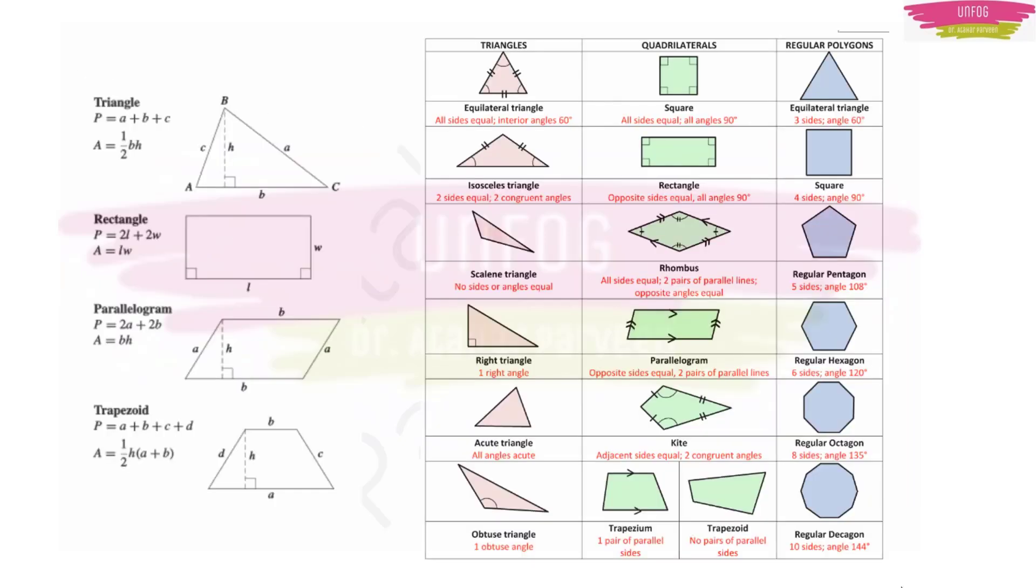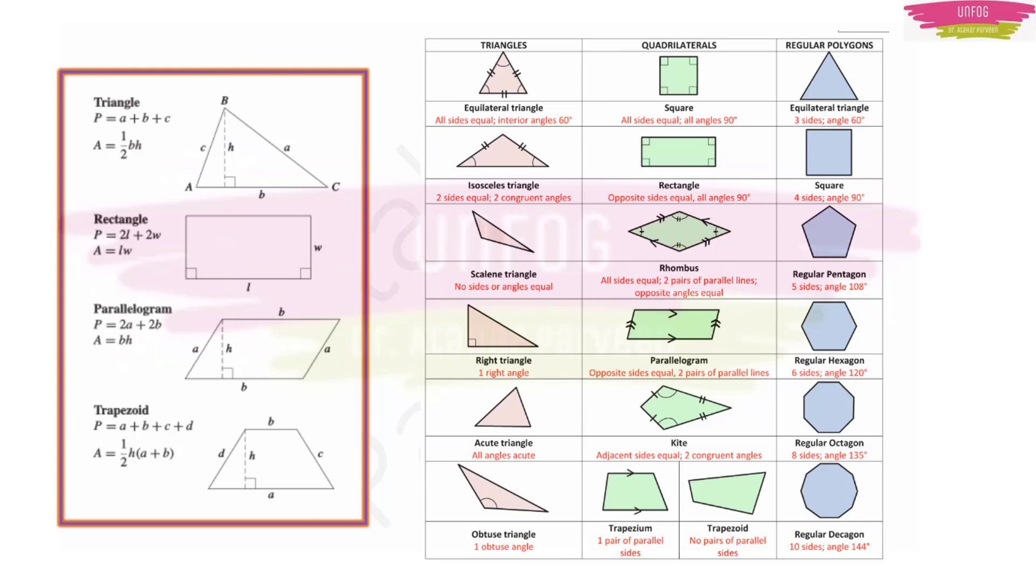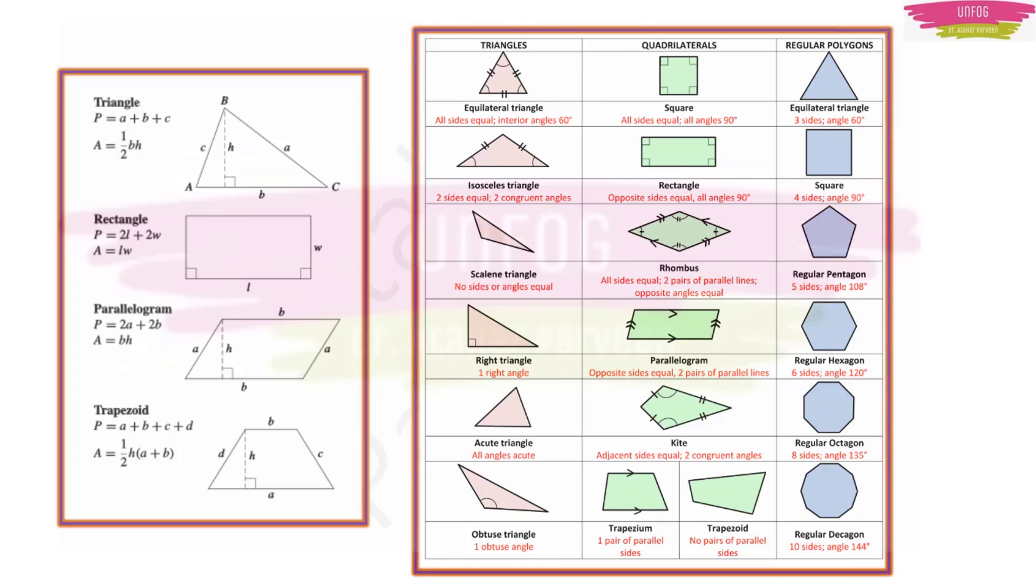Then again, coming back to geometry, we have this perimeter for a triangle is a + b + c, and the area will be (1/2) × base × height. Like that only for rectangle, it will be 2(l + b), b or w width or breadth. Then for parallelogram, perimeter will be 2a + 2b, area will be breadth × height. And for trapezoid, perimeter will be a + b + c + d, and area will be (1/2) × height × (a + b). Then of course, it is better you know all the properties of the quadrilaterals, triangles, and regular polygons also.